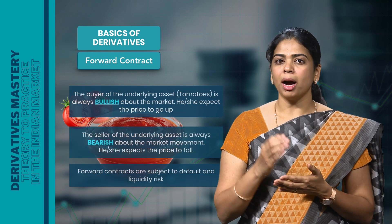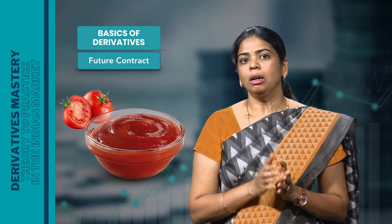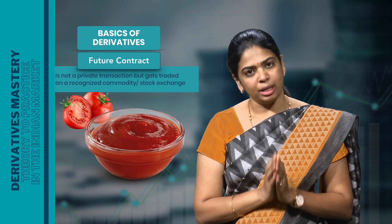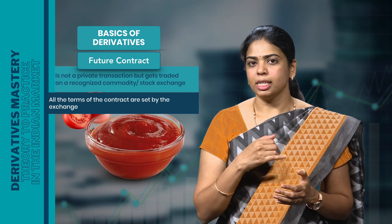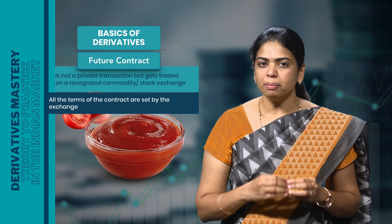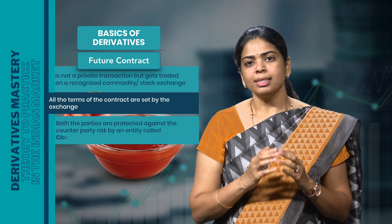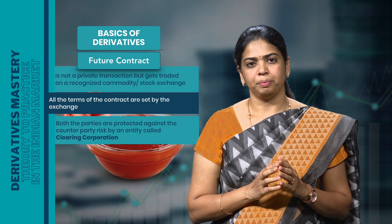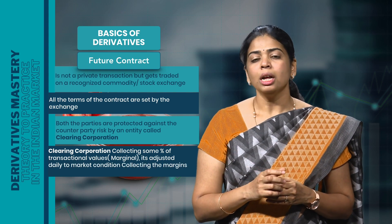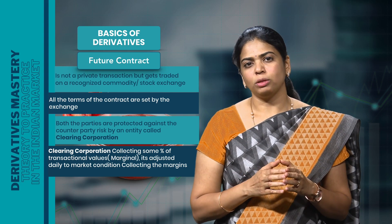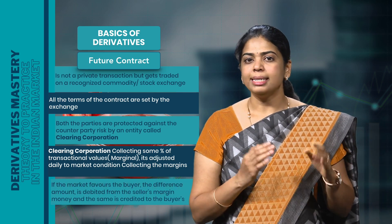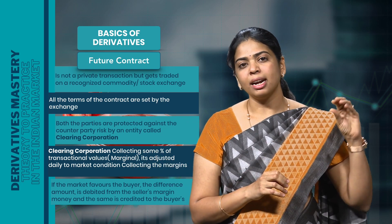In order to overcome these risks, the parties can enter into a futures contract instead of a forward agreement. Unlike forward contracts, a futures contract is not a private transaction but gets traded on a recognized commodity exchange. All the terms of the contract — the expiry date, transaction timing, minimum transaction quantity — are set by the exchange. Most importantly, both parties of the futures contract are protected against counterparty risk by an entity called the clearing corporation. The clearing corporation collects a certain percentage of the total transaction value as margin money from both parties, and this margin money is adjusted daily to market conditions. If the market situation favours the buyer, the difference amount is debited from the seller's margin money and credited to the buyer's margin money.